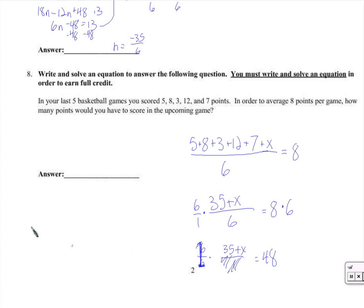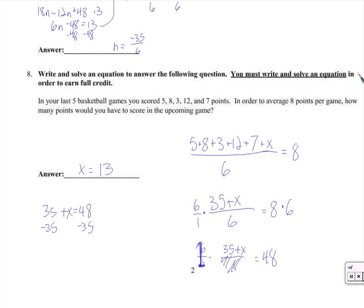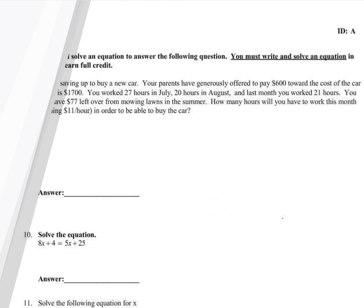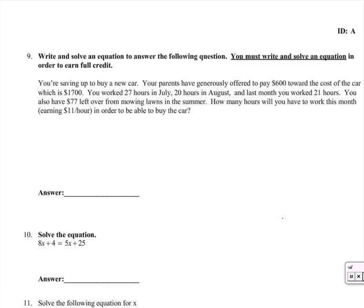We have 35 plus x equals 48. We subtract 35 from both sides, so x would need to be 13. You have to score 13 points in the next game to average 8 over those 6 games.